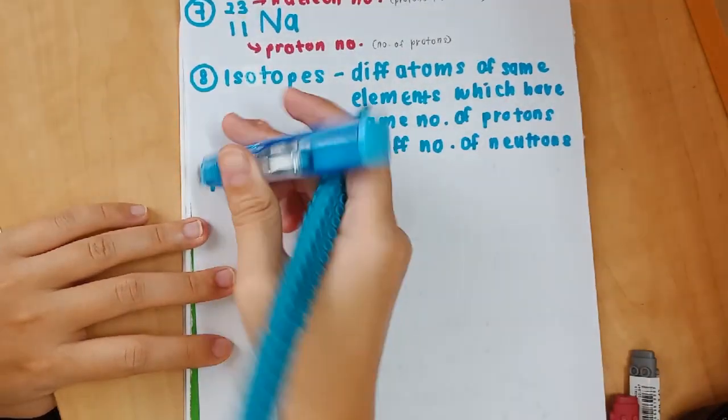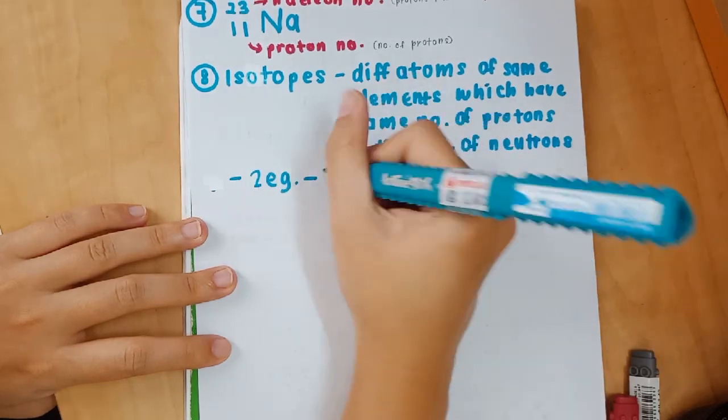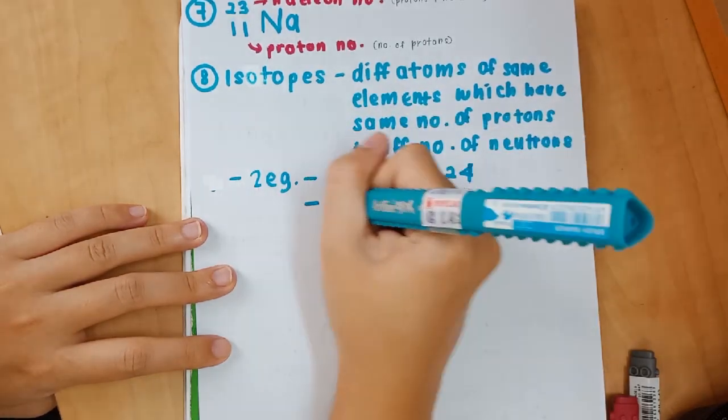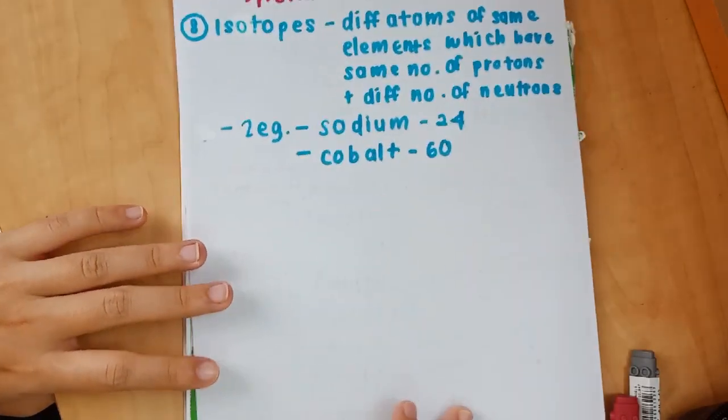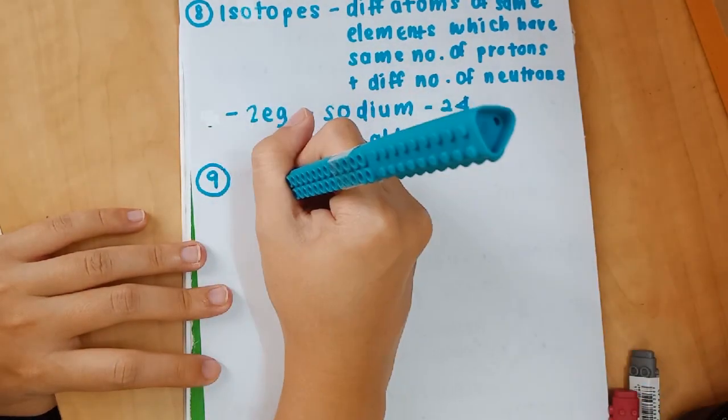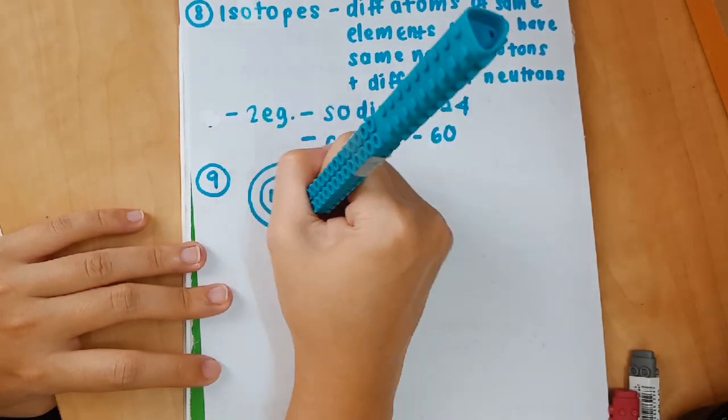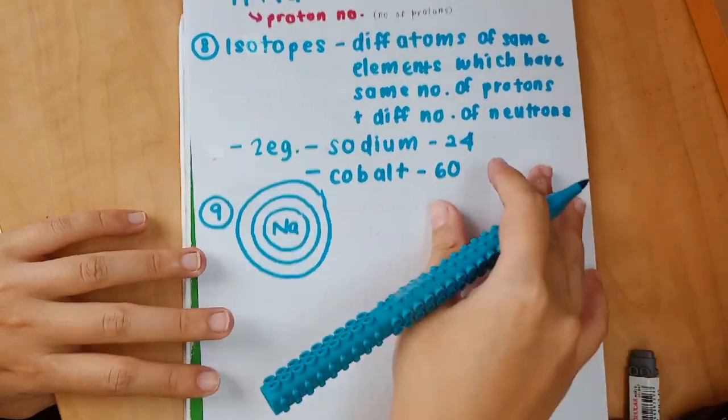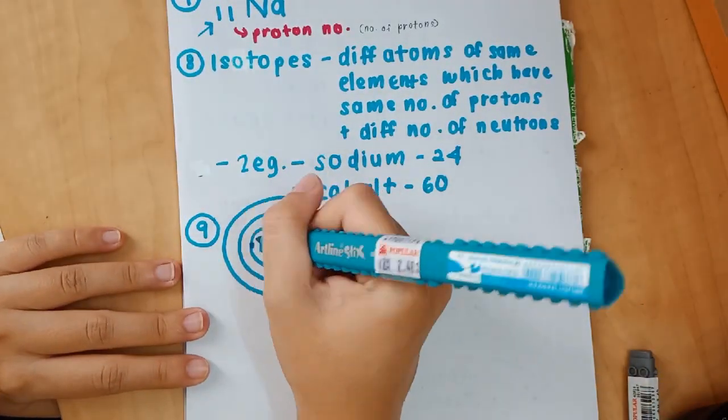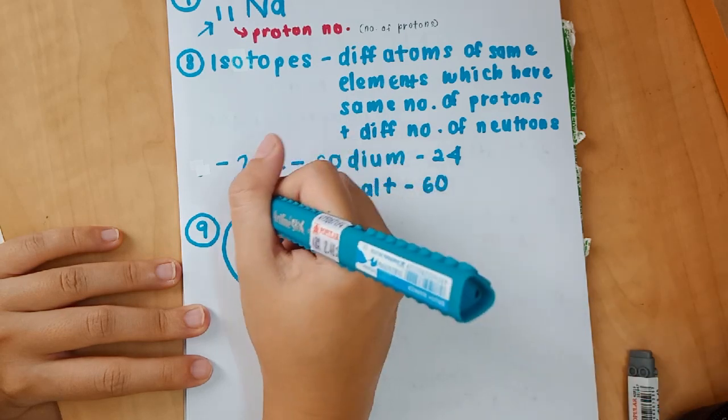Along with the definition, you need to know two examples of isotopes as well. The examples I'm choosing are sodium-24 and cobalt-60. Sodium-24 detects leaks of underground pipes, while cobalt-60 can kill cancer cells.